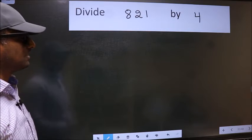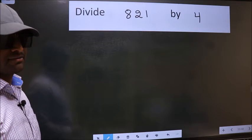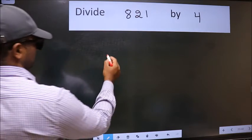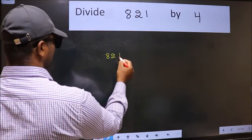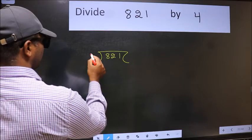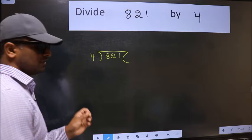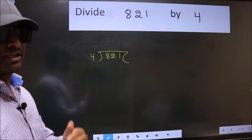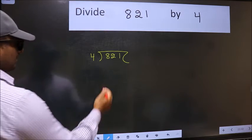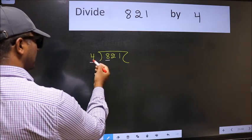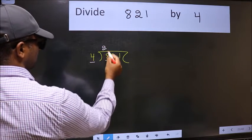Divide 821 by 4. To do this division, we should frame it in this way: 821 here and 4 here. This is your step 1. Next, here we have 8 and here 4. When do we get 8 in the 4 table? 4 times 2 is 8.